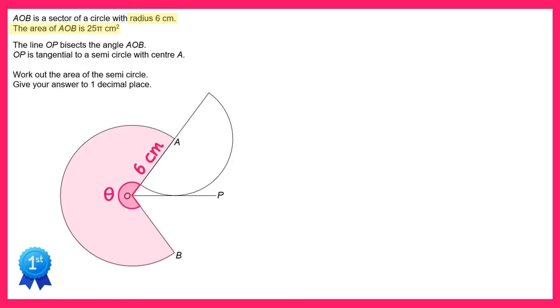So the area of a sector is theta divided by 360 times by π and then times by the radius squared. We know the radius though, that's 6, and we know for this one this must equal 25π.